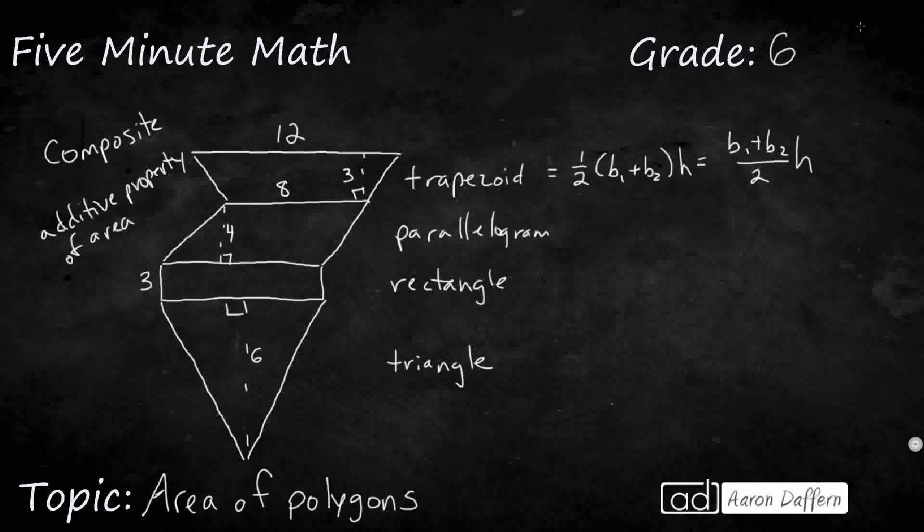So what do we know about this trapezoid? I'll use this first formula. I'll say 1/2. It doesn't matter which one's base 1 or which one's base 2, so let's just add the two. I've got 12 and 8. And then the height, there's no vertical line on this particular trapezoid, so they give it to you in this dotted line in the middle. That's the 3.